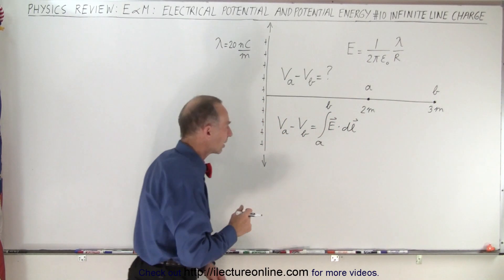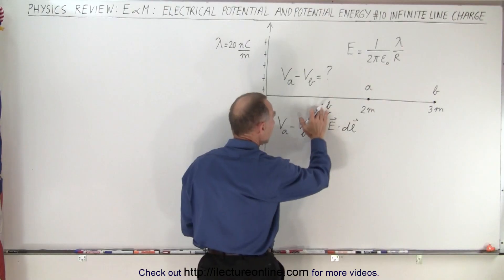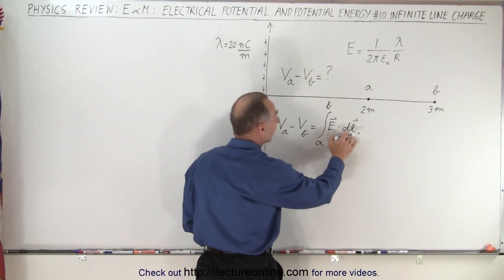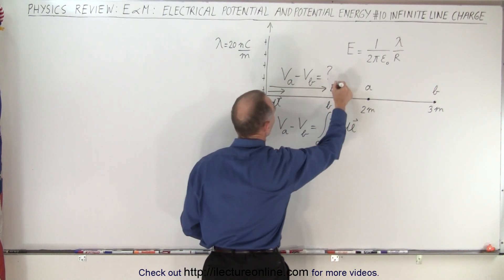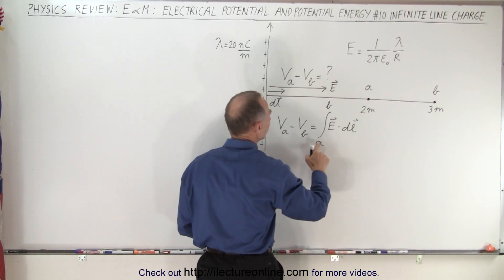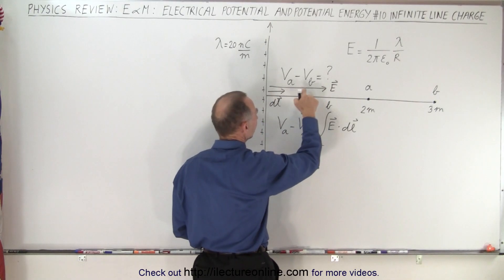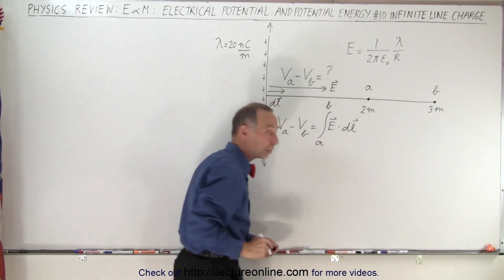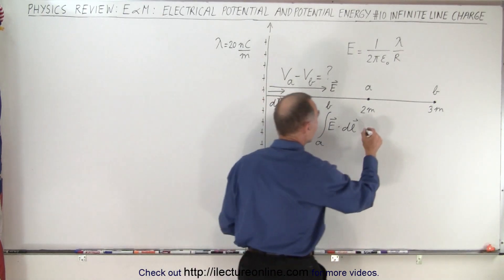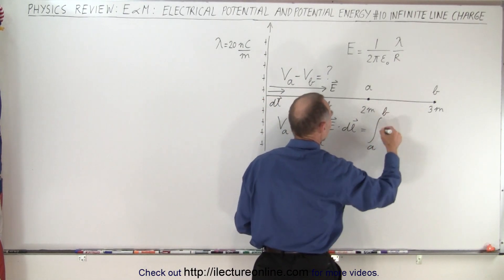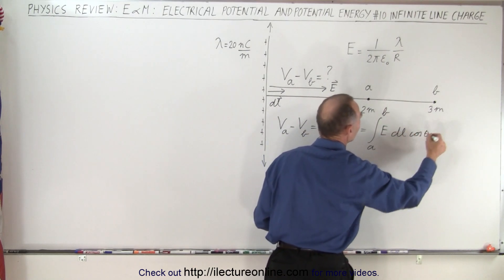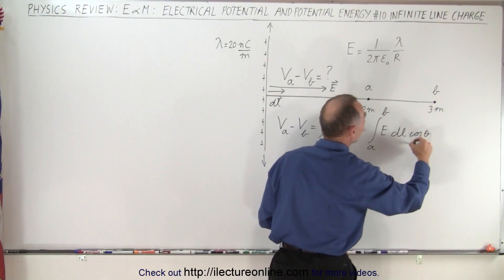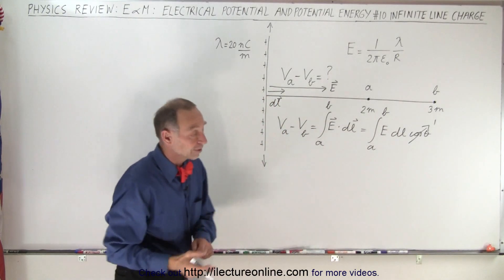When we're integrating from A to B, dl will be in the direction from A to B, and of course so will the electric field. Since we're integrating from A to B, the direction of dl and the direction of E are the same, so since this is a dot product it becomes equal to the integral from A to B of E times dl times the cosine of the angle between them — but that is equal to one since the angle between them is zero.